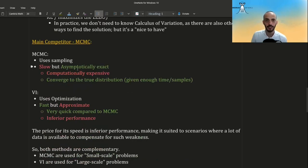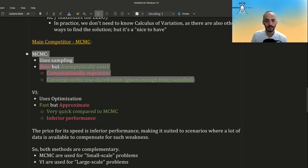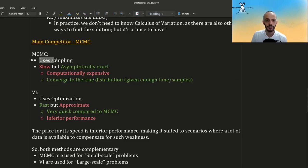Who are the competitors of variational inference? Well, the main competitors are MCMC, Markov Chain Monte Carlo. It uses sampling, it's much slower, but it's asymptotically exact. So if you are willing to pay the computational price, you will have samples from the true distribution, but you might have to wait for a very long time.